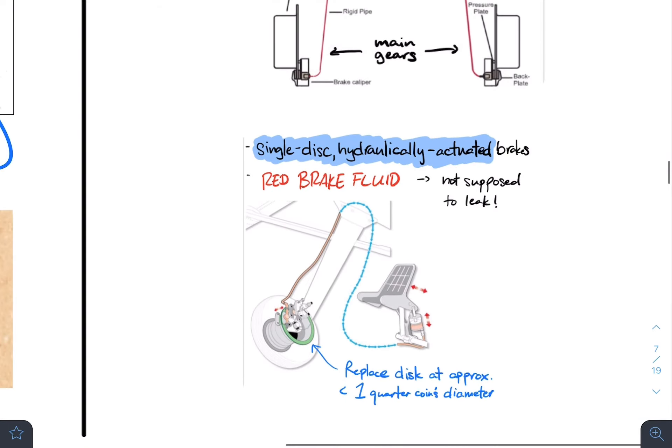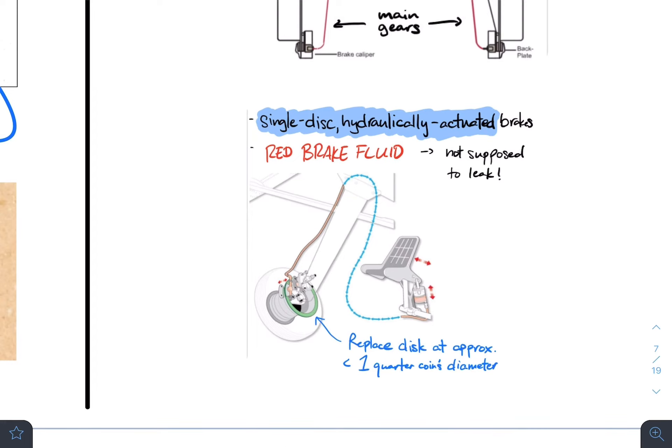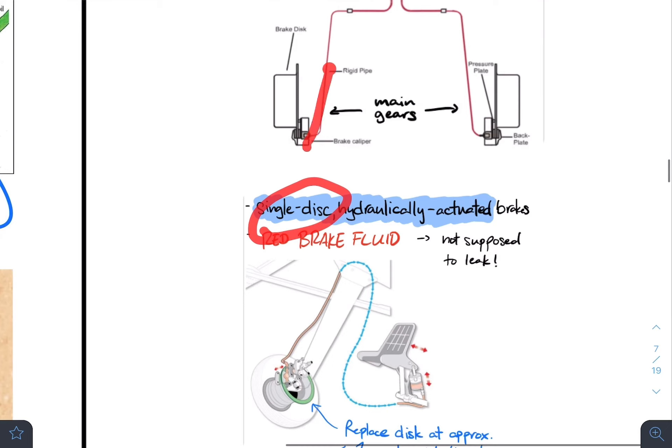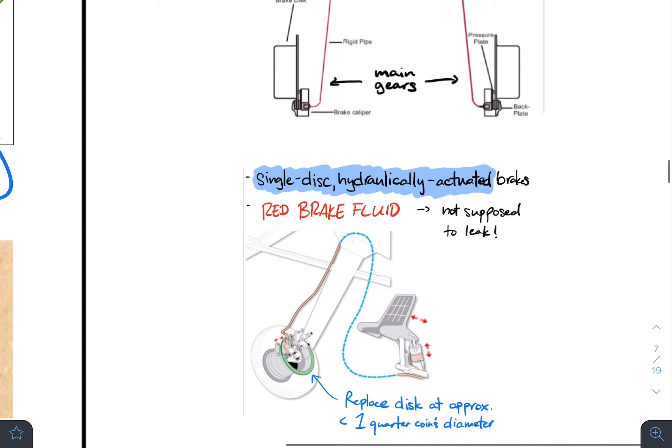Essentially, what the DPE is expecting from me is to explain that it is a single disc, one disc per brake, hydraulically actuated brake. When we say hydraulically actuated, that means it uses hydraulic fluid. And very important, this hydraulic fluid is red.